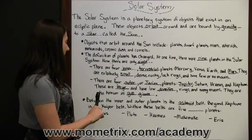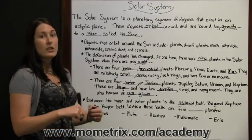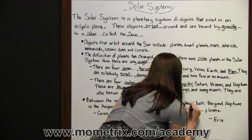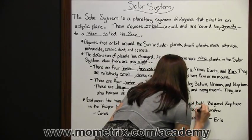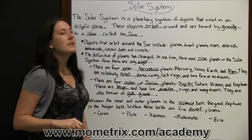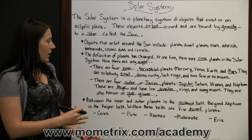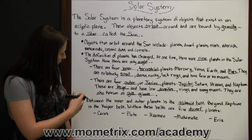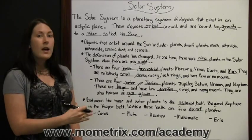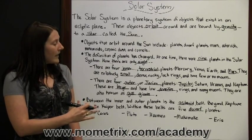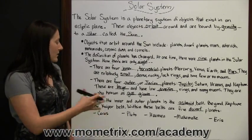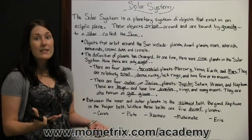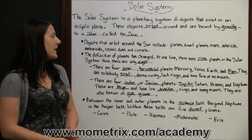Beyond Neptune is the Kuiper belt, which is another belt of asteroids. Within these belts are five dwarf planets: Ceres, Pluto, Haumea, Makemake, and Eris. They are bigger than normal asteroids but are not classified as planets.